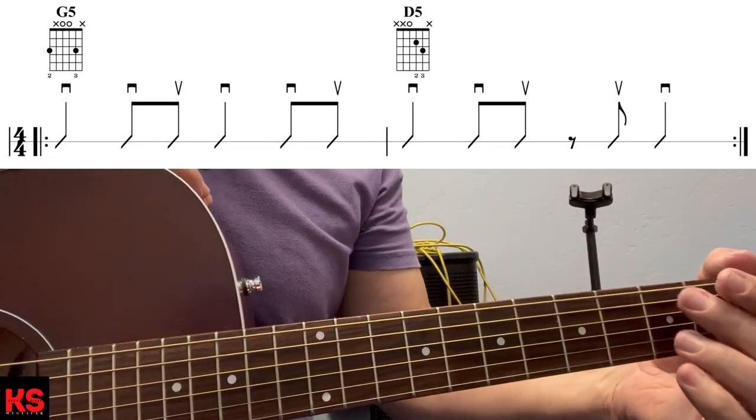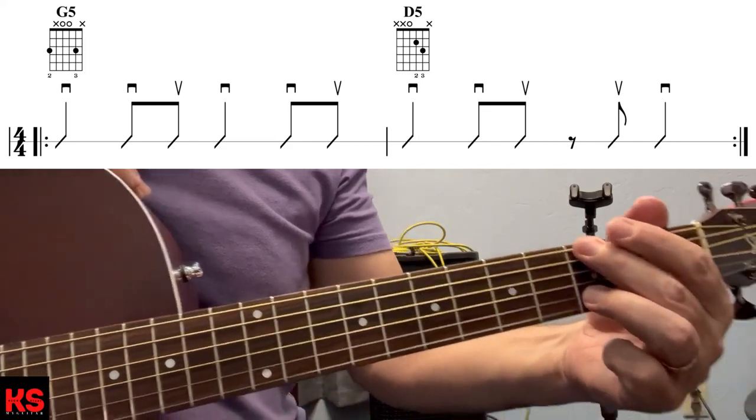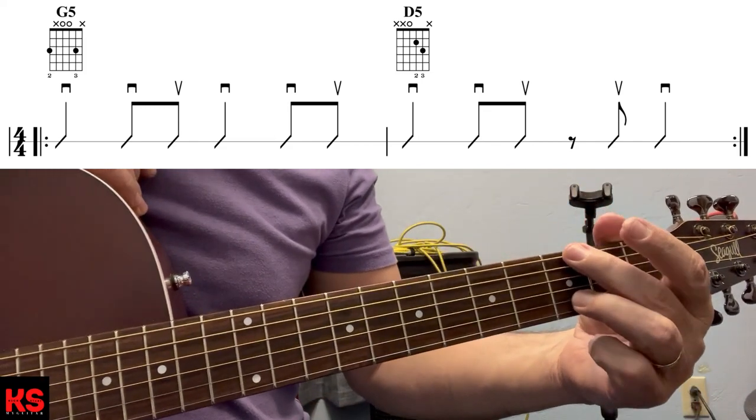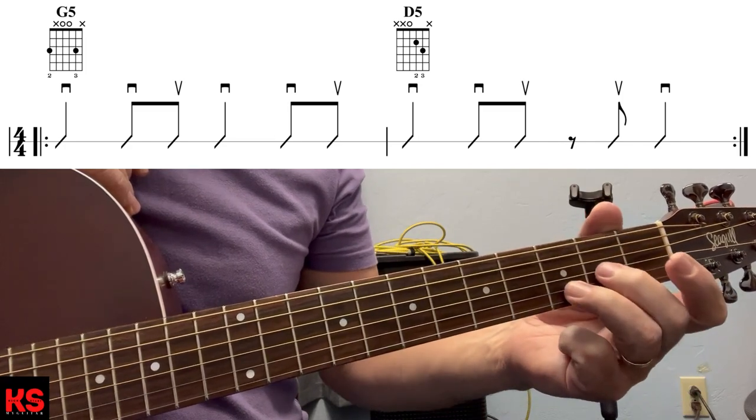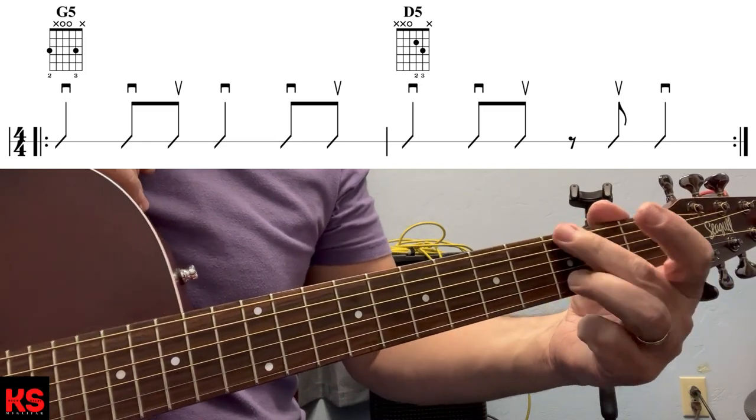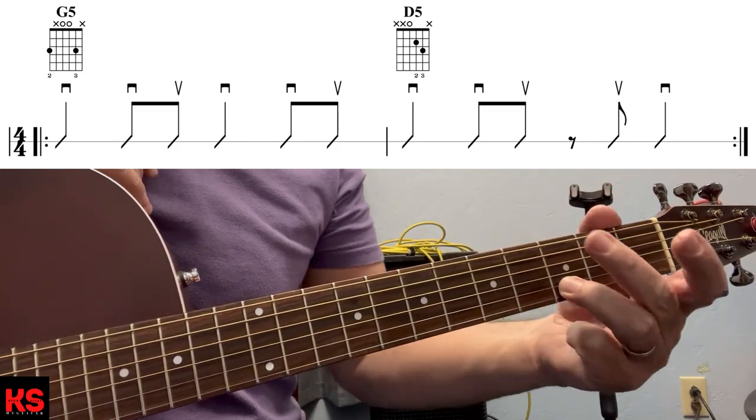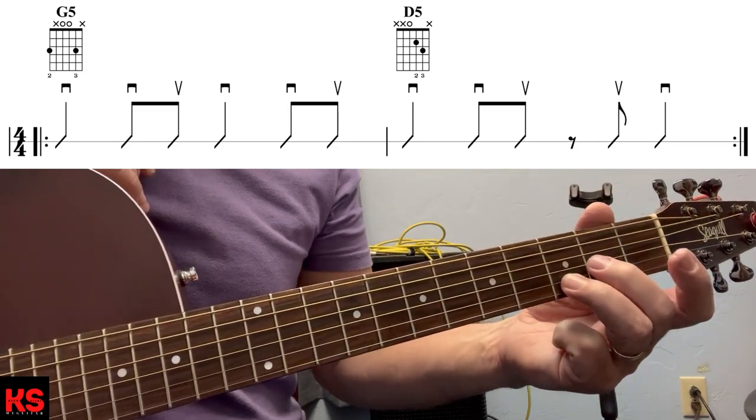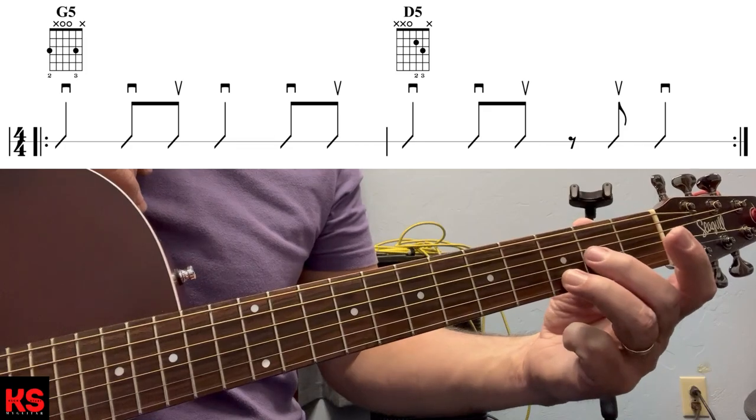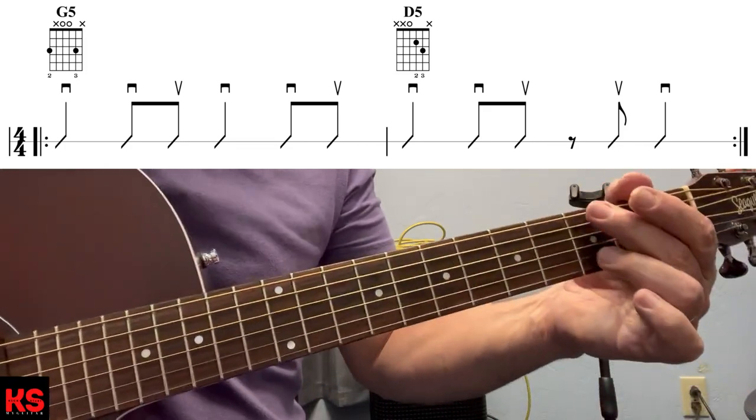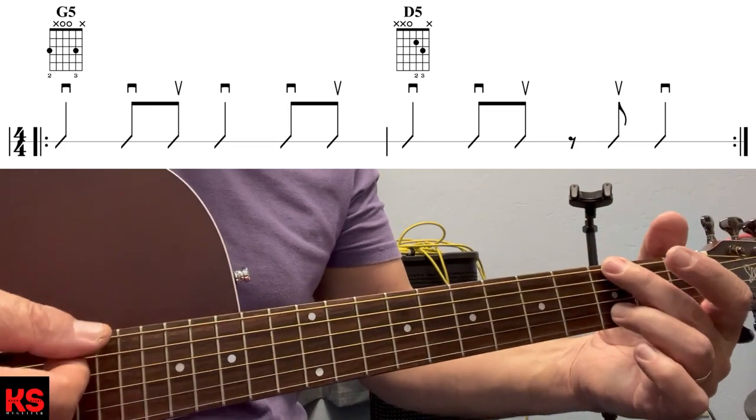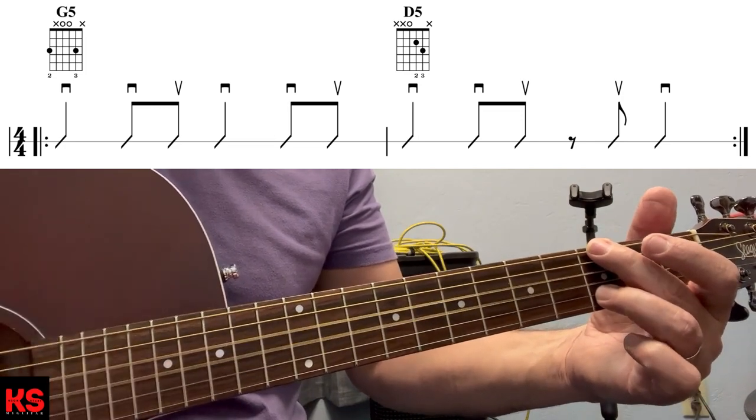All right, here's number two going from our D5, I'm sorry, G5 to the D5, G5 to the D5, while anchoring our third finger on the second string, right? We don't move that finger. We're just swinging our hand back and forth. Here's number two. One, two, three, four.